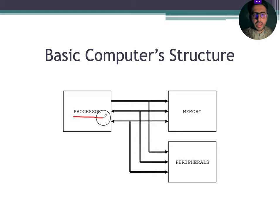The first one is processor, also known as central processing unit or CPU. It controls the operation of the computer and performs data processing functions.